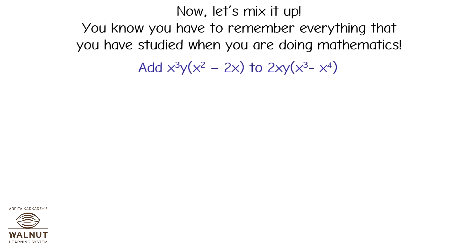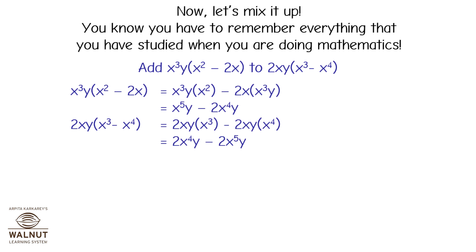Add x cubed y multiplied by (x squared minus 2x) and 2xy multiplied by (x cubed minus x raised to 4). Now x cubed y multiplied by (x squared minus 2x) equals x cubed y into x squared minus 2x into x cubed y, which is equal to x raised to 5y minus 2x raised to 4y. And 2xy multiplied by (x cubed minus x raised to 4) equals 2xy into x cubed minus 2xy into x raised to 4, which is equal to 2x raised to 4y minus 2x raised to 5y.